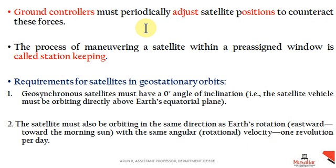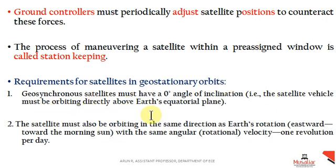Next, let's look at the requirements for satellites in geostationary orbits. The first and most important requirement is a zero angle of inclination — that means the satellite must be orbiting directly above the earth's equatorial plane. The angle of inclination is the angle between the equatorial plane and the orbital plane, and for geostationary satellites it must be zero.